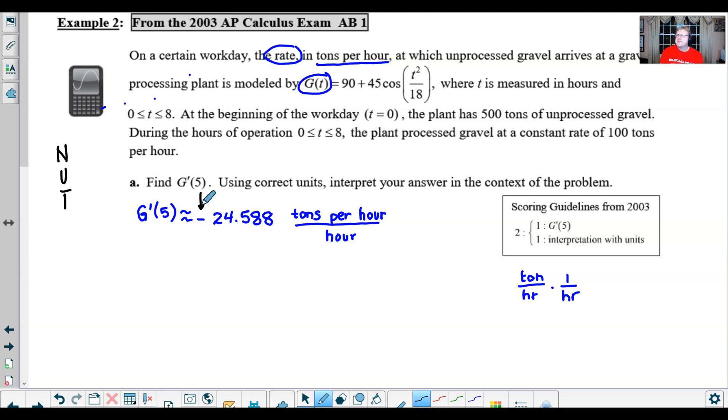So what is it that's decreasing? Is it the amount of gravel? Well no, it's this attribute of the gravel, it's the rate. And that's why I circled that value to really emphasize that that is the noun in our particular problem.